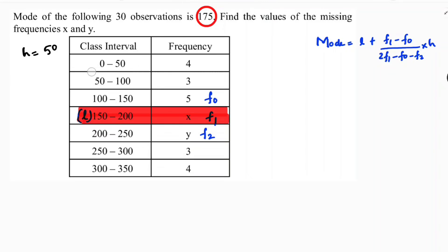Now the total frequency is also given, so it will be better if we make one equation here. See, 4 plus 3 is 7, 7 plus 5 is 12, 12 plus 3 is 15, 15 plus 4 is 19.